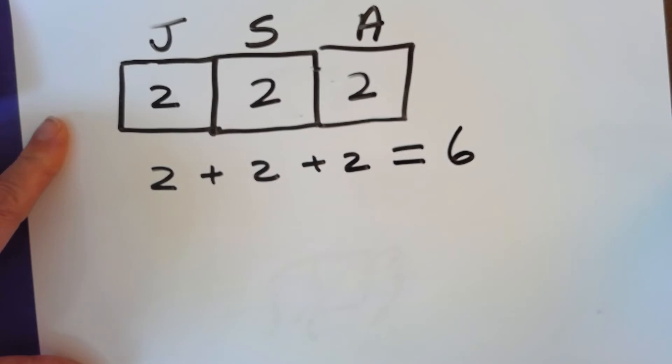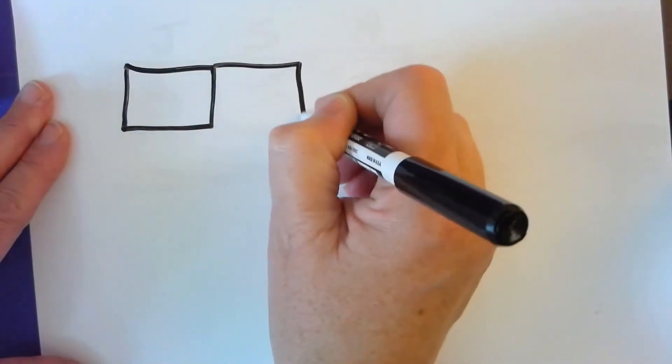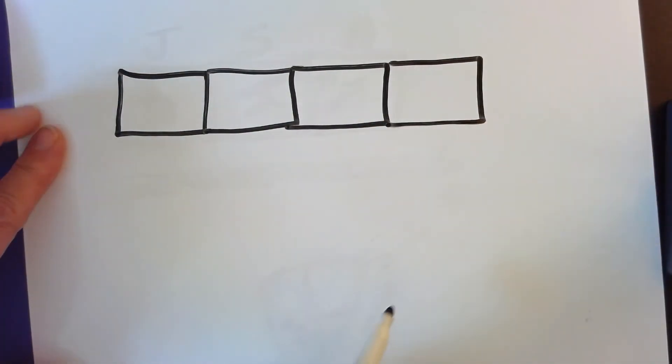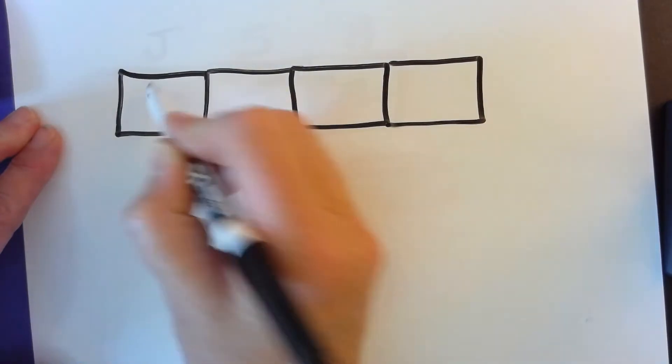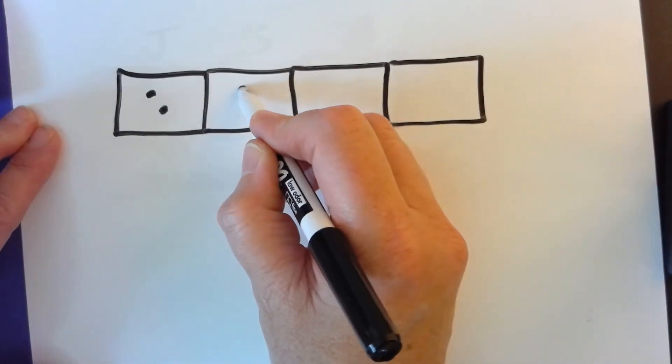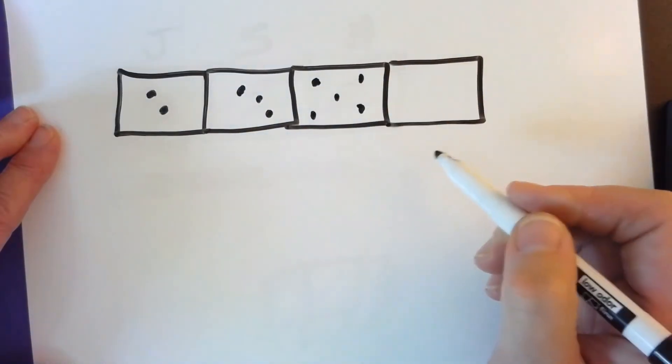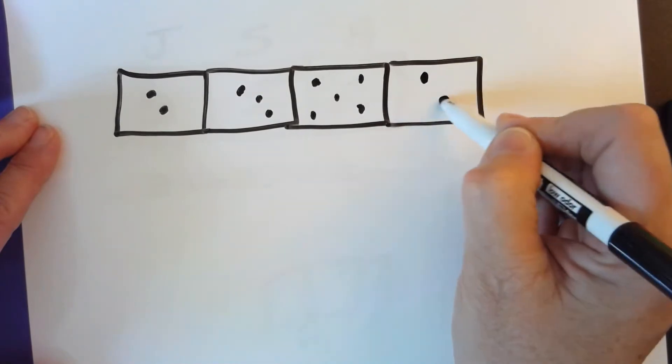We're going to draw a tape diagram that has four parts. Okay, so now what we're going to do, I'm going to erase this. We want to draw a tape diagram that has four parts. One, two, three, four. There's four parts. Now use your counters to show two in the first group, three in the next group, five in the next group, and two in the last group.